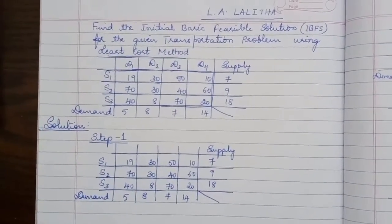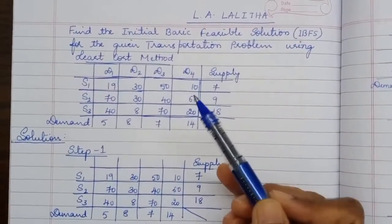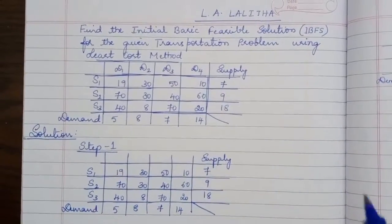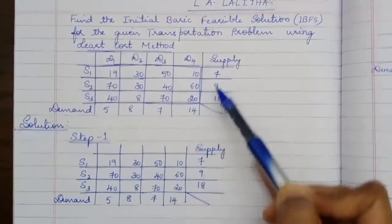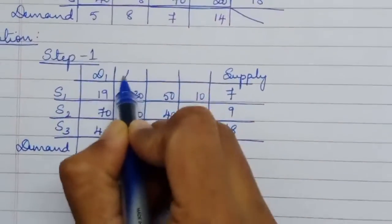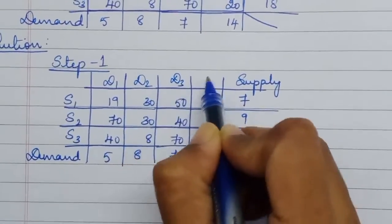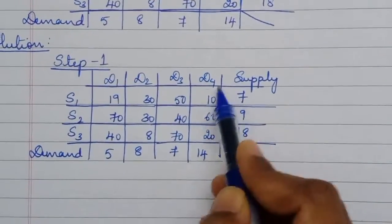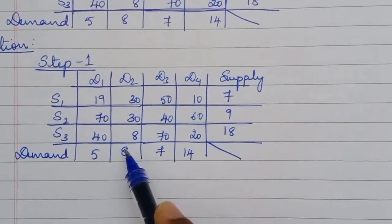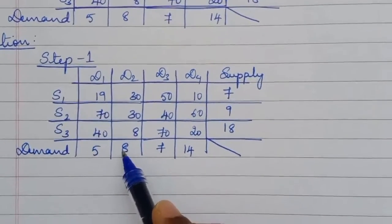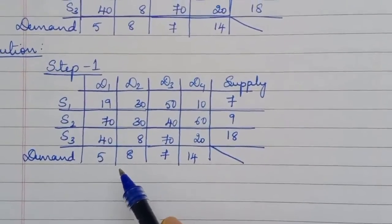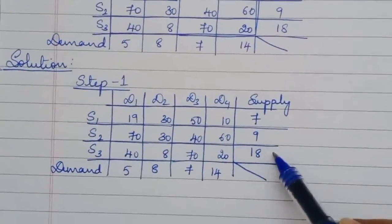In the least cost method, you look at the whole cost matrix and choose the cell which has the least cost to start the allocation. In step one I have rewritten the problem. Before allocating, in each step you must check whether the transportation problem is balanced or not.